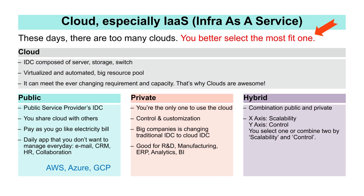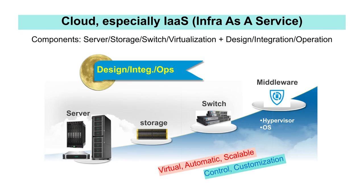Hybrid cloud is a mix of public and private clouds. Public cloud is better when scalability is important, and private cloud is better when control is important, so it is recommended to mix the two based on your criteria. To summarise: cloud virtualises and automates servers, storage, switches, etc., and uses them as a resource pool.